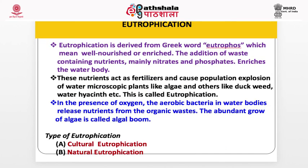Now, eutrophication. Eutrophication is derived from the Greek word eutrophos, meaning well-nourished or enriched. The addition of waste containing nutrients, mainly nitrates and phosphates, enriches the water body. These nutrients act as fertilizers and cause a population explosion of microscopic water plants like algae and other plants like duckweed, water hyacinths, etc. This is called eutrophication. In the presence of oxygen, aerobic bacteria in water bodies release nutrients from organic waste. The abundant growth of algae is called an algal bloom. Eutrophication is of two types: cultural eutrophication and natural eutrophication.